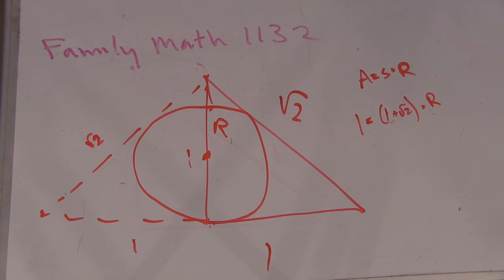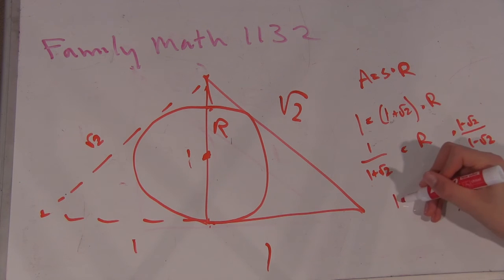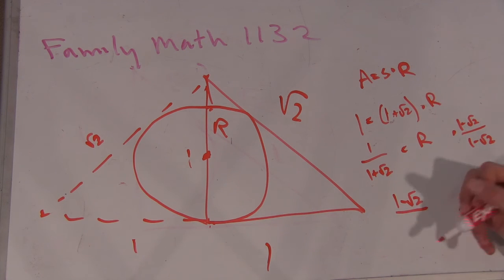Okay, so then I guess we can divide by 1 plus root 2, so we get 1 over 1 plus root 2 equals r. You could leave it like this, but we can rationalize the denominator by multiplying by 1 minus root 2, and we get 1 minus root 2 divided by 1 minus 2.